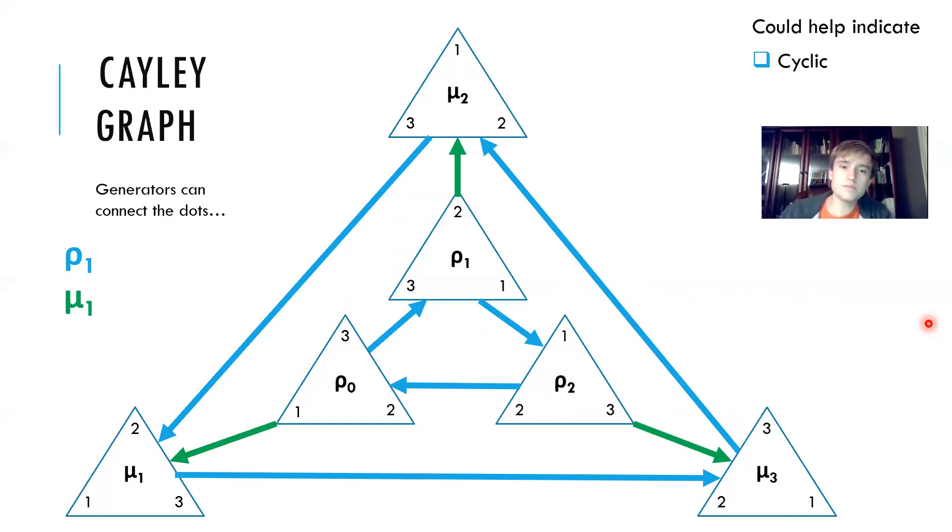For example, we see that the graph is not cyclic because it has two different colors. How Cayley graphs relate to cyclic groups is if the Cayley graph only has one color, that means there's only one generator in the generating set, which means with our new definition that the group is cyclic. If this was cyclic, it would only have one color arrow.